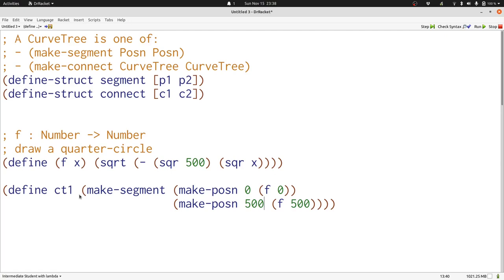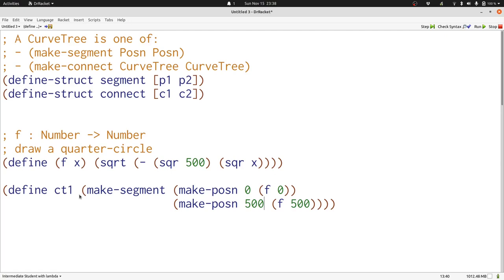What about a slightly more interesting curve tree? Here's a more interesting curve tree that splits our original curve in the middle until we've got two segments. We can keep doing this, splitting things in the middle repeatedly until we get as precise a curve tree as we want.